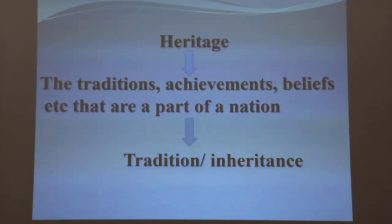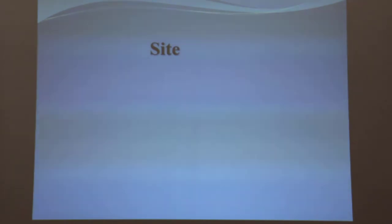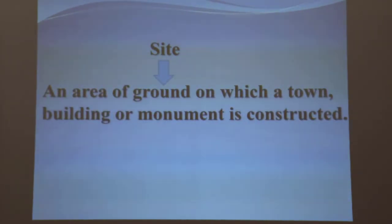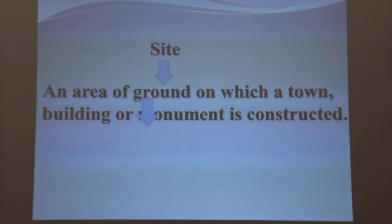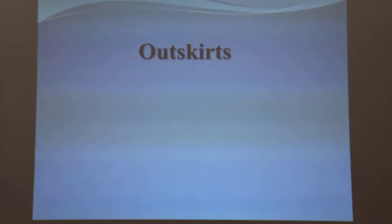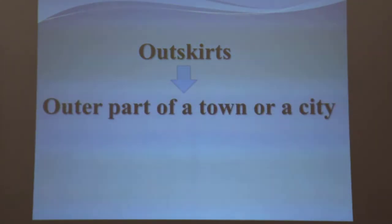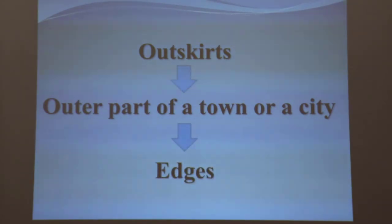Satgumbuz mosque is a heritage. Next, site. Site means an area of ground on which a town, building or monument is constructed. Its synonymous word is spot. Satgumbuz mosque is a heritage site. Next, outskirts. Outskirts means the outer part of a town or a city. Its synonymous word is edges. Satgumbuz mosque is situated at the outskirts of Bagerhat town.